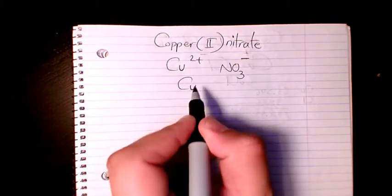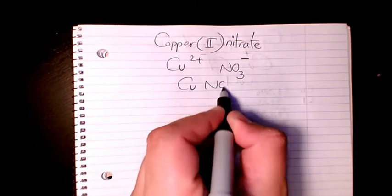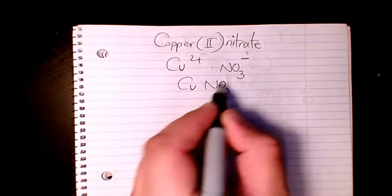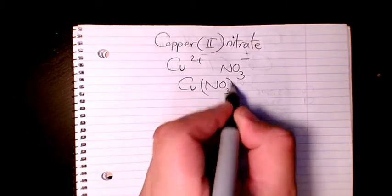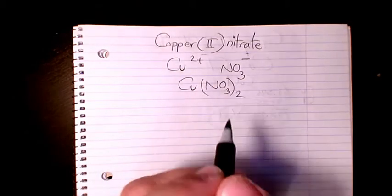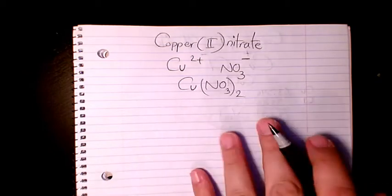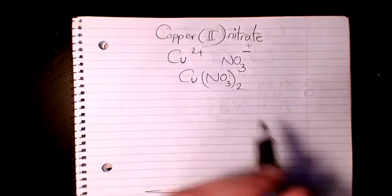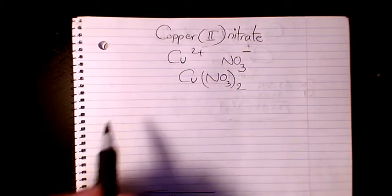So when you write the molecular formula it's going to be Cu(NO3), and the two belongs to this one, one is going to sit here, so it's going to be Cu(NO3)2. So that's the molecular formula, Cu(NO3)2.